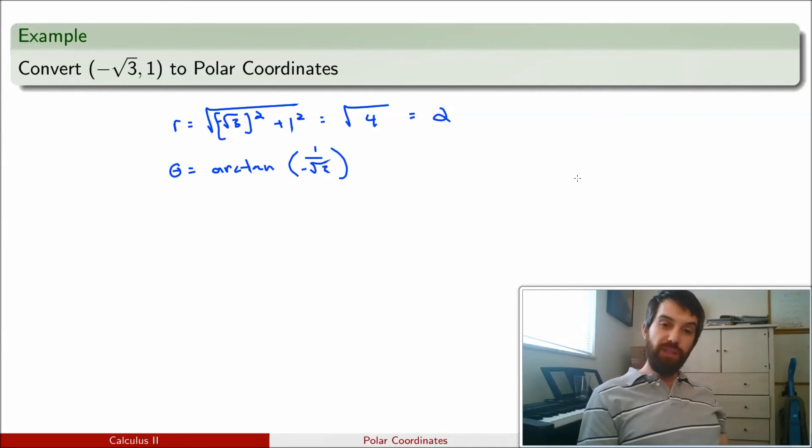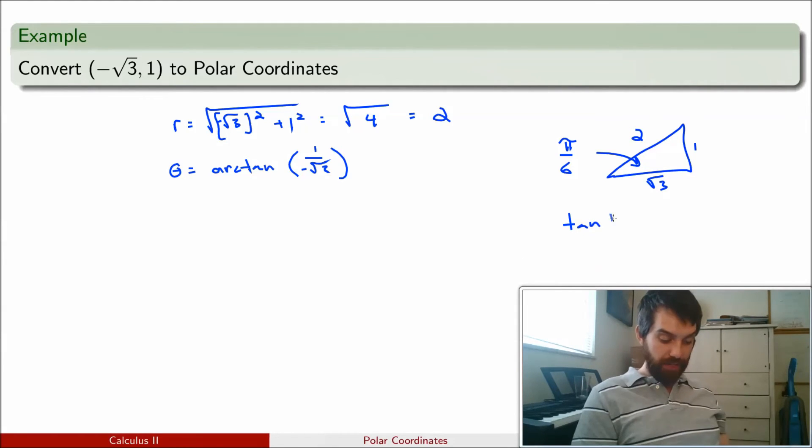So, to compute this value, I need to remind myself of one of the canonical triangles. It is the 1, 2, root 3 triangle, and that occurs for the value of theta equal to pi over 6. So, if I think about this, then what I have is that tangent of pi over 6 is 1 divided by square root of 3.